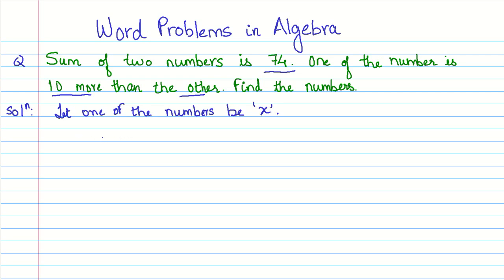Now what is going to be the other number? We know that one of the number is 10 more than the other. So the other number is pretty simple. It is 10 more than x, right? x plus 10. So we have one variable. We have a relationship between the two numbers. Now we also have another condition.